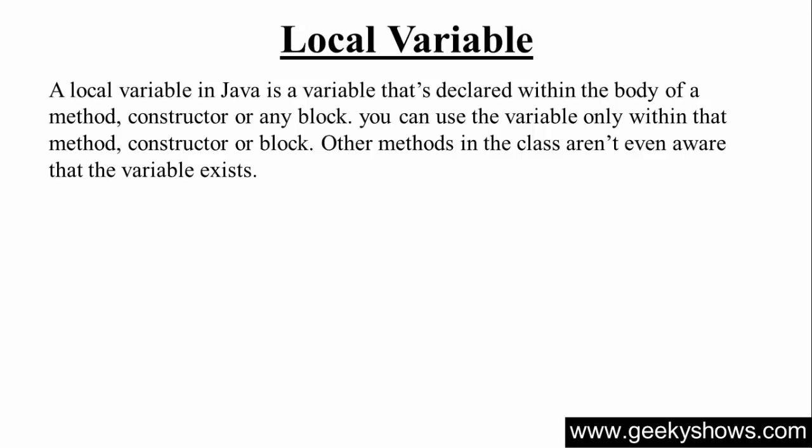Hi guys, in this tutorial we will talk about local variables in Java. A local variable is a variable that is declared within the body of a method, constructor, or any block. You can use the variable only within that method, constructor, or block. Other methods in the class aren't even aware that the variable exists.